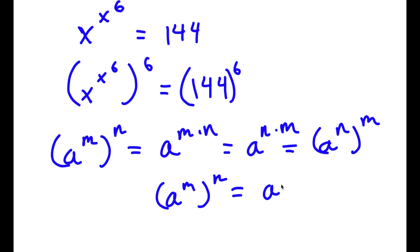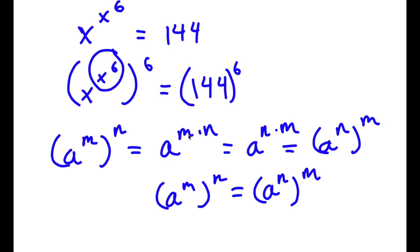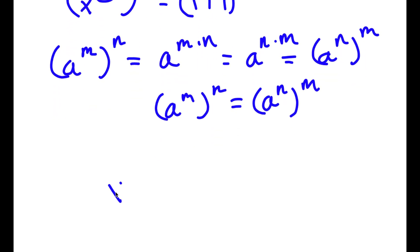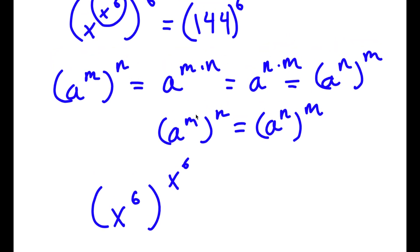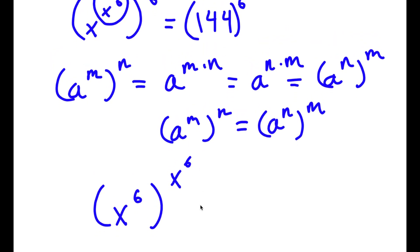So in this case, I have x to the power of x to the power of 6, all to the power of 6. We can think of x to the power of 6 as m, and 6 as n. So if I switch these two places, I get x to the power of 6, to the power of x to the power of 6, and this is equal to 144 to the power of 6.